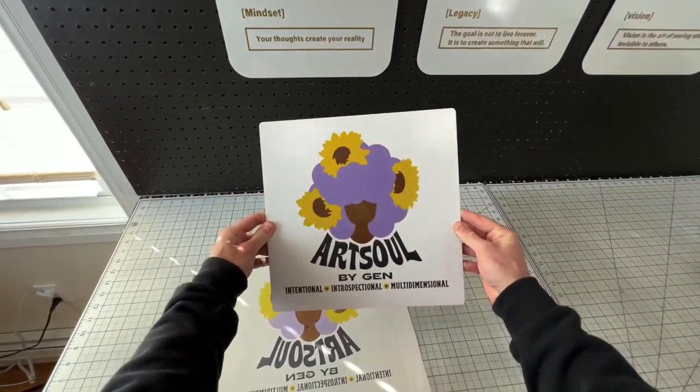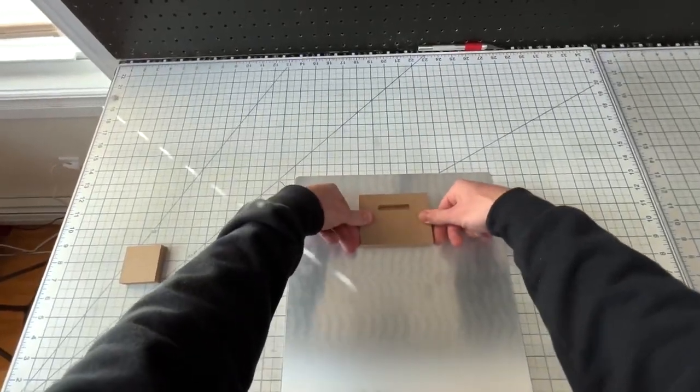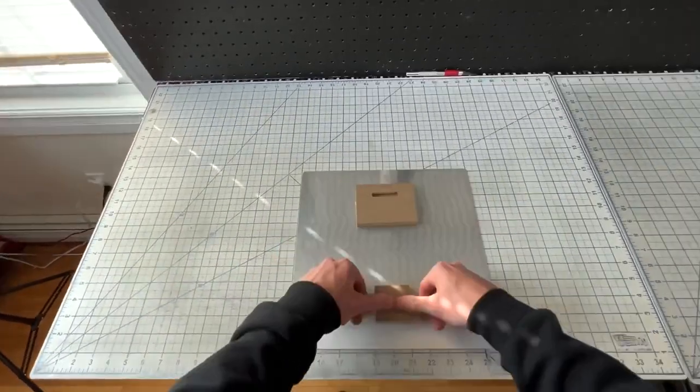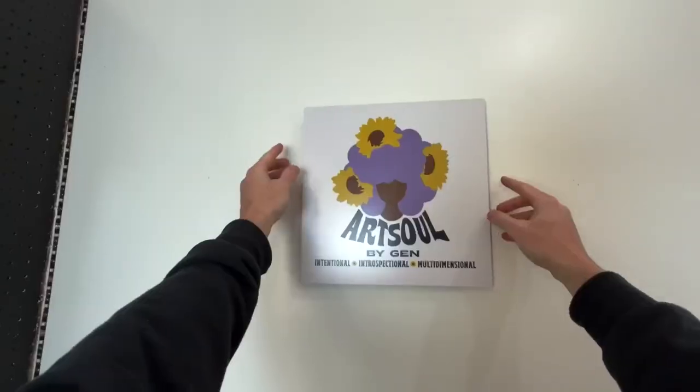What I do after that is I take these wall mounts, they're floating wall mounts, and I stick them onto the back with adhesive. And then when you hang them on the wall, it looks like it's sitting about one inch off of the wall. Hence why it's called a floating wall mount.